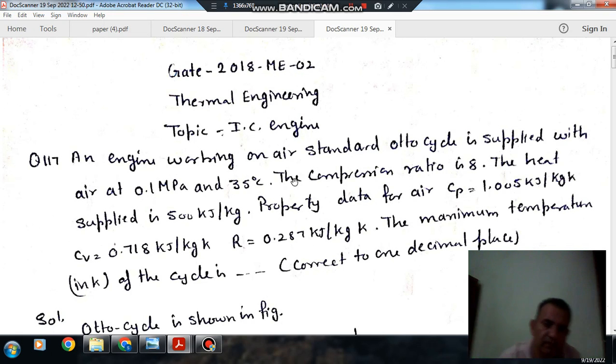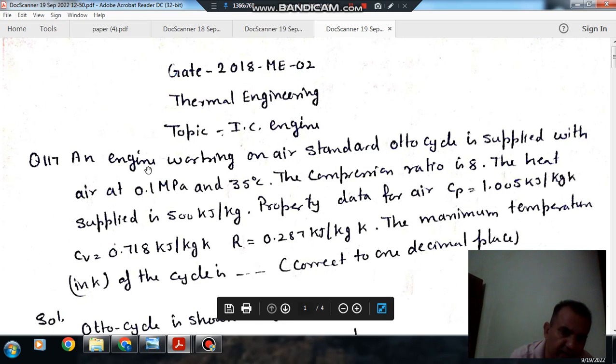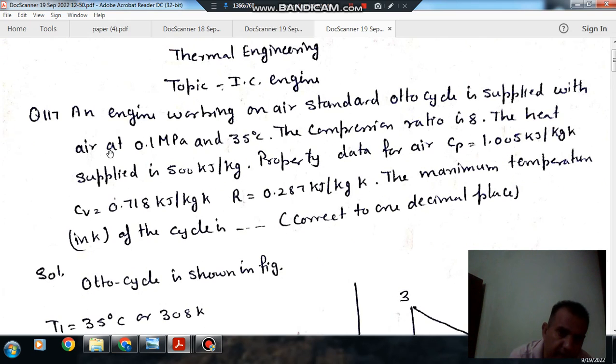Hello, welcome again. We are following some questions of thermal engineering, topic is IC engine. Question number 117 from GATE 2018. An engine working on air standard Otto cycle is supplied with air at 0.1 MPa and 30 degrees Celsius.